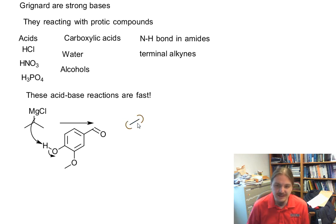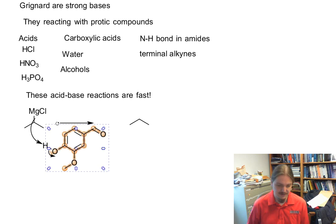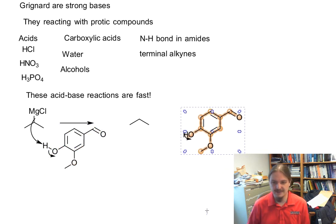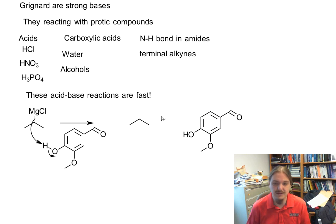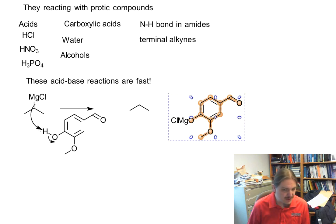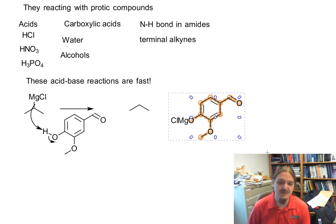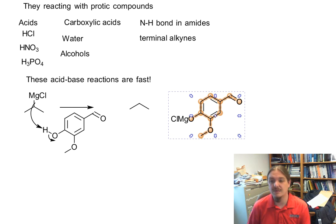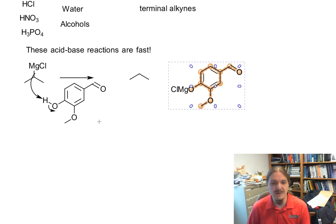This reaction generates the conjugate acid of the Grignard reagent, which is just the hydrocarbon, and the conjugate base as its chloromagnesium salt, O-MgCl. You probably don't want this to happen. So you either need to avoid incompatible functional groups in your electrophiles, use protecting groups to block the reaction, or rethink your synthesis — maybe that functional group can come in later.